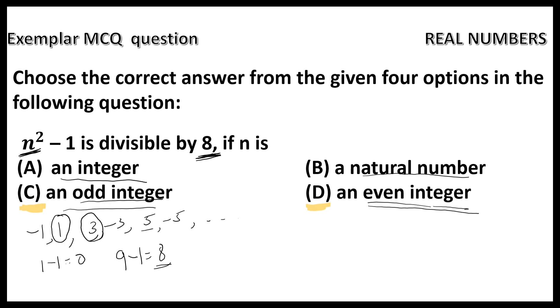Now let us move on to the next odd number which is 5. 5 square is 25, 25 minus 1 that is 24 which is also divisible by 8. So option C is correct.